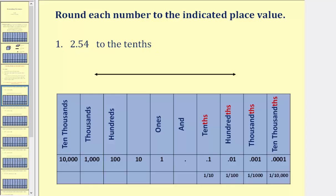Notice how the five is in the tenths place value, which means 2.54 would be between 2.5 and 2.6. So to round 2.54 to the tenths place value, we're really asking: is 2.54 closer to 2.5 or 2.6? Let's look at this on the number line.